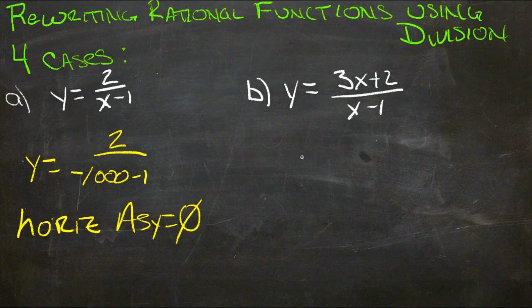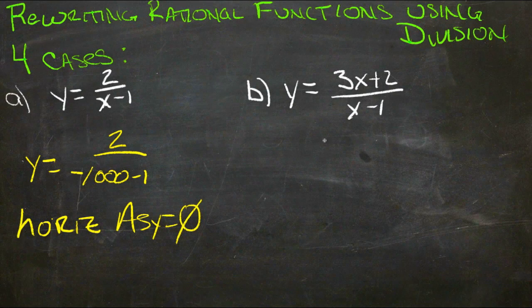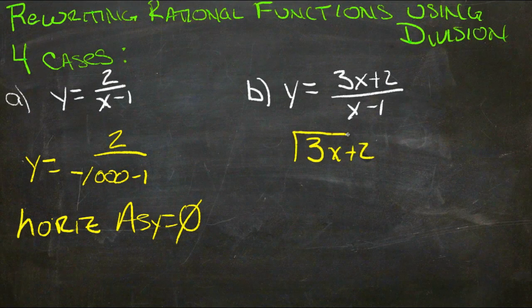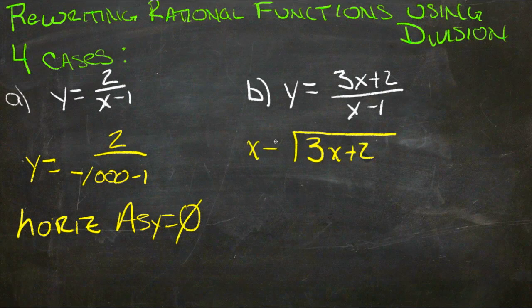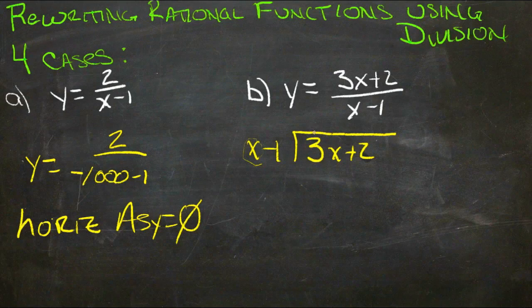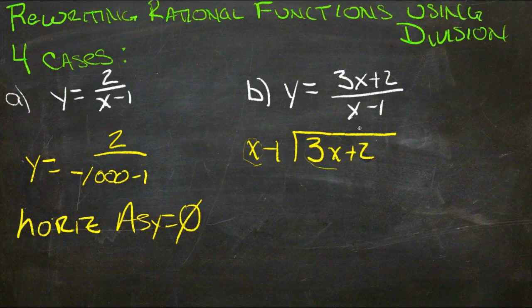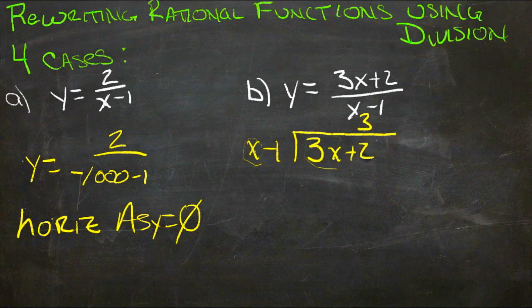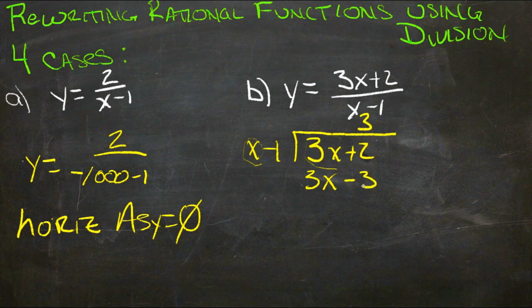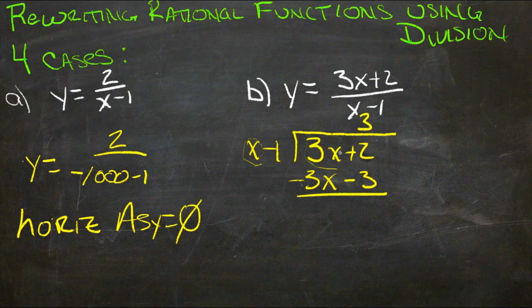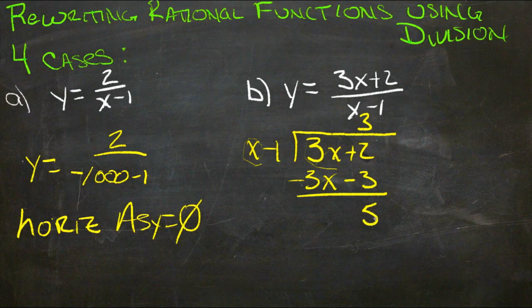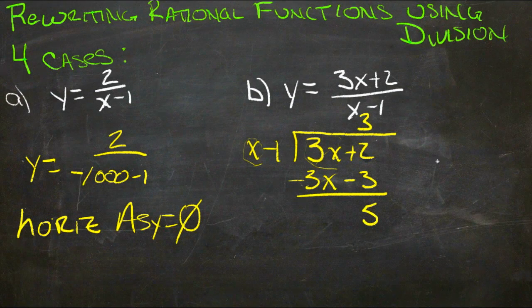For our second one here, we need to reduce this as much as we can, so we're going to divide 3x plus 2 by x minus 1. Using our long division, we need to find what it takes to make this term equal to this term. In this case, we'd have to multiply by 3, so we'll put our 3 up on top. 3 times x is 3x, 3 times negative 1 is negative 3. 3x minus 3x is zero, and 2 minus negative 3 is 5, so since we can't divide 5 by x minus 1, that becomes our remainder.